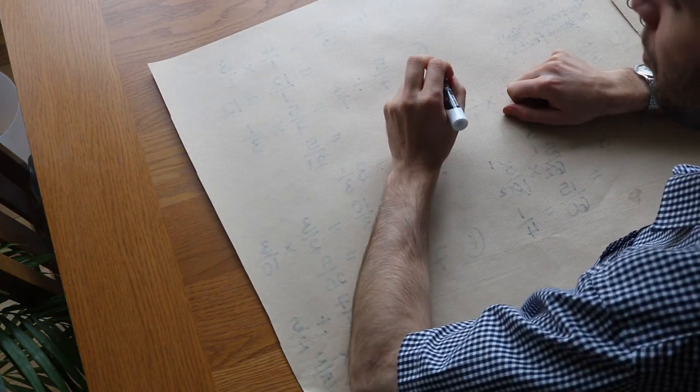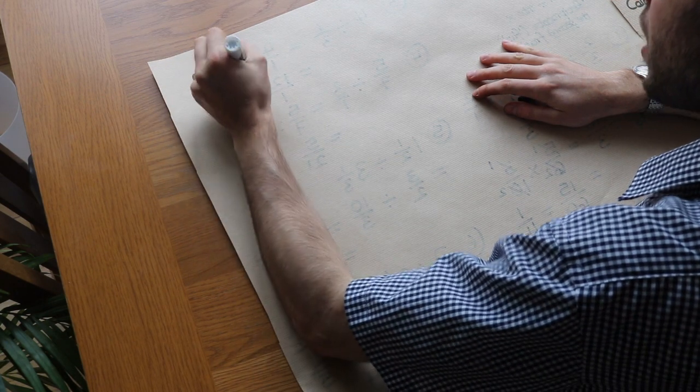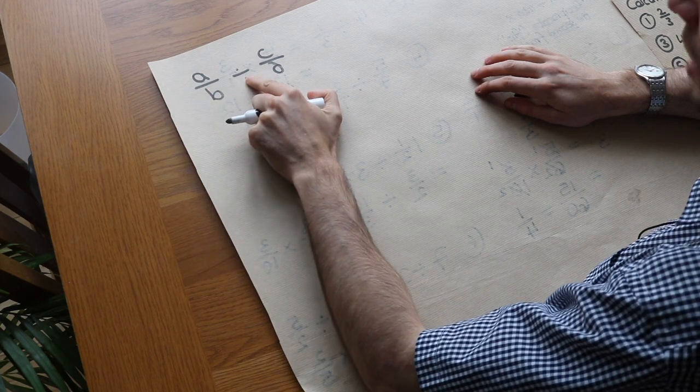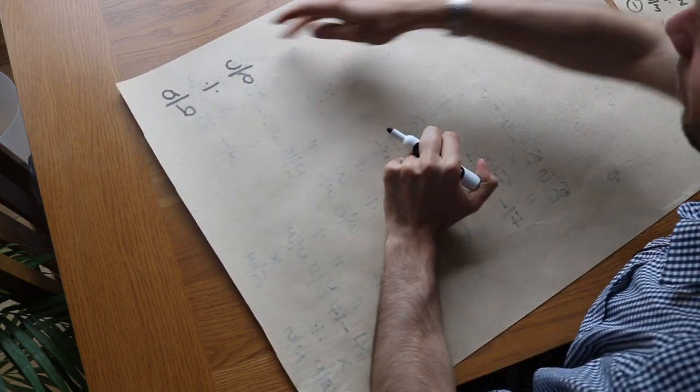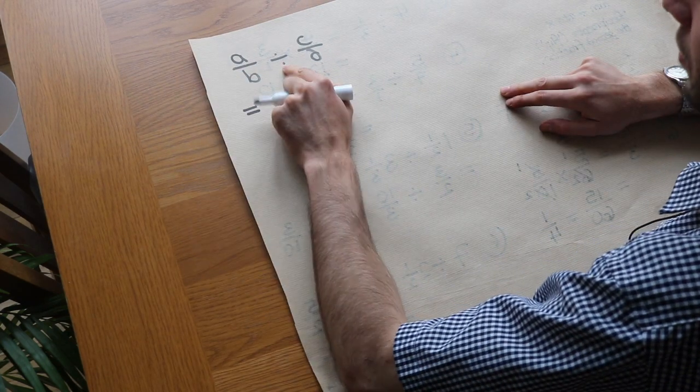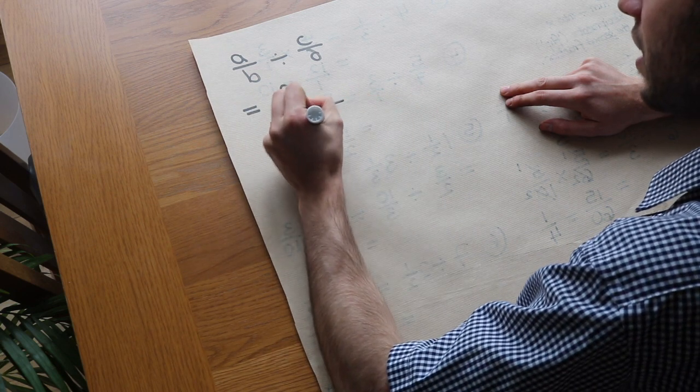Now I want to finish by quickly proving why when you divide a/b by c/d, that turns into a/b times by d/c where you flip the second fraction. Do you remember that a division could just be thought of as a fraction? So we've got a/b divided by c/d.